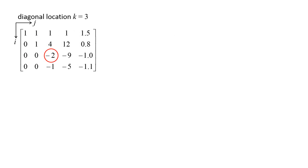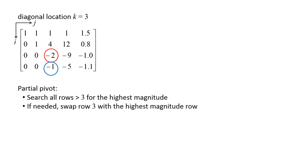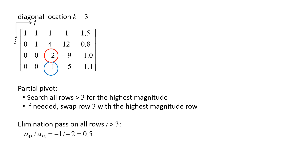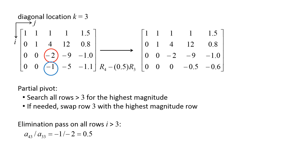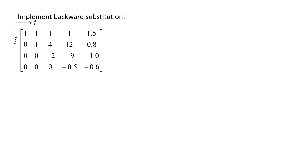We move to the third diagonal location and k increases to 3. The value of this diagonal element is negative 2. We check if partial pivoting is necessary by searching below the diagonal — negative 2 has a higher magnitude than the value in row 4, which is negative 1, so pivoting is not necessary. Next we perform an elimination pass on all rows greater than 3. The factor for the fourth row is A43 divided by A33, which is negative 1 divided by negative 2, giving 0.5. So we subtract 0.5 times row 3 from row 4. This gives us a new augmented matrix with a zero below the third diagonal element, completing the forward elimination step.